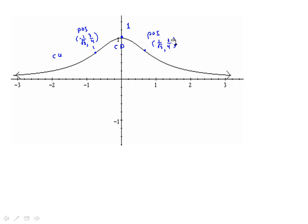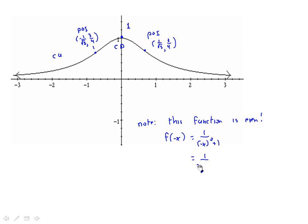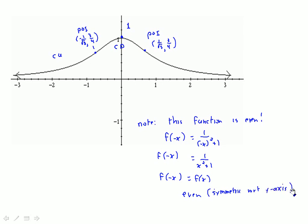We end up with a pretty nice looking graph. The function is even, because f(negative x) equals 1 over (negative x) squared plus 1, which becomes 1 over x squared plus 1. So f(negative x) equals f(x), which means it's symmetric with respect to the y-axis. The graph shows a maximum of 1 at the origin, no x-intercepts, concave down in the middle transitioning to concave up at the inflection points. The remaining graphs will be done in another video. Thank you for your time.